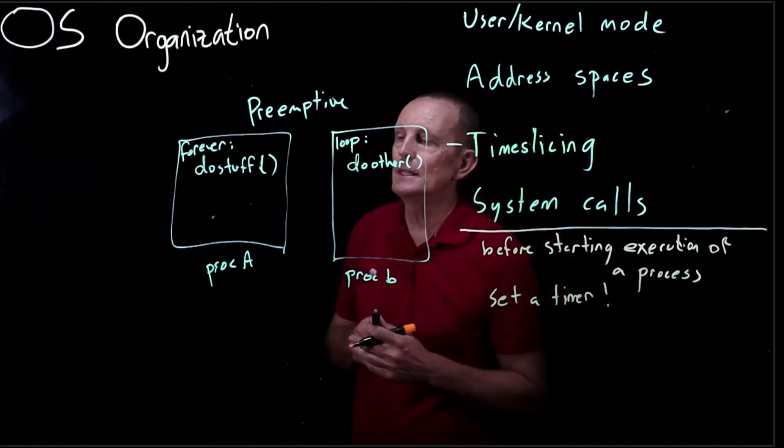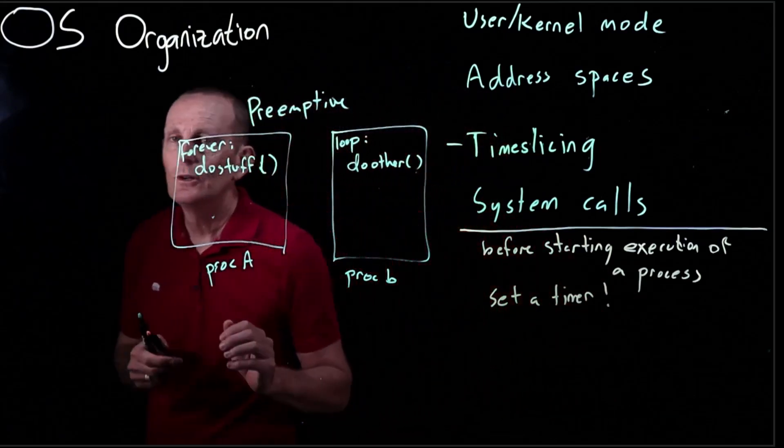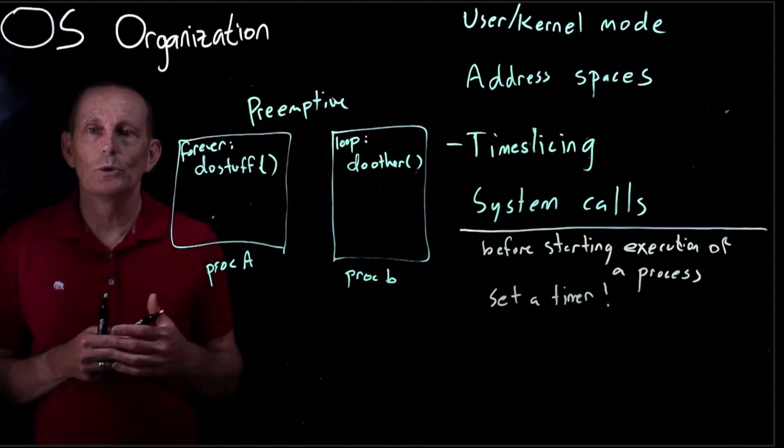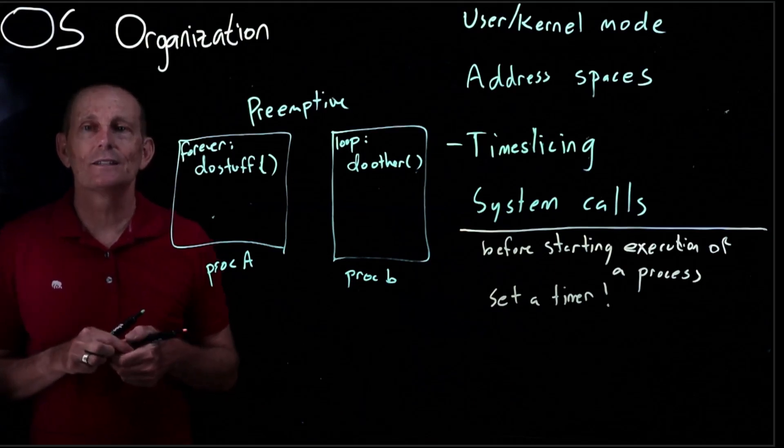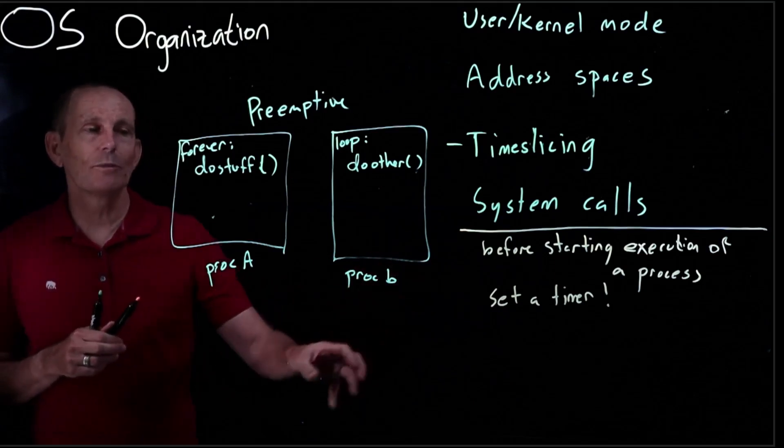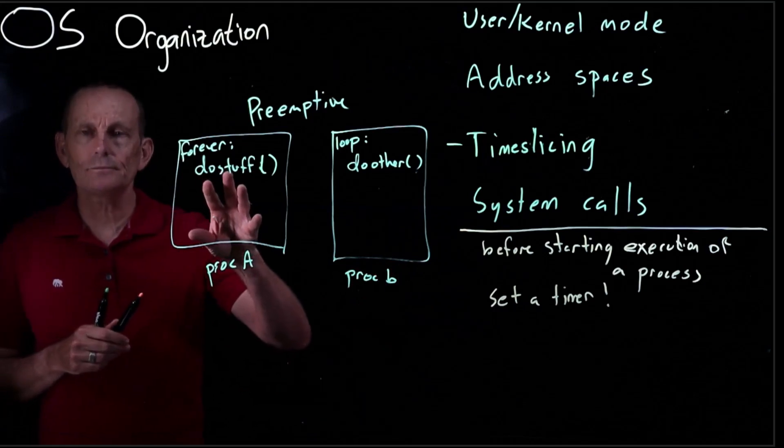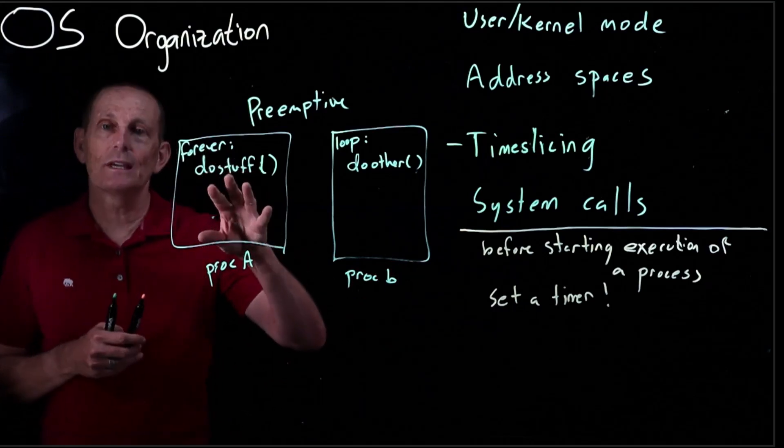Okay so what that means is the kernel sets a timer let's say for I don't know how much so a second would probably be way too big. Let's give it a millisecond. So we're going to set a timer for a millisecond and call process A. There's two possibilities of what happened in that case.